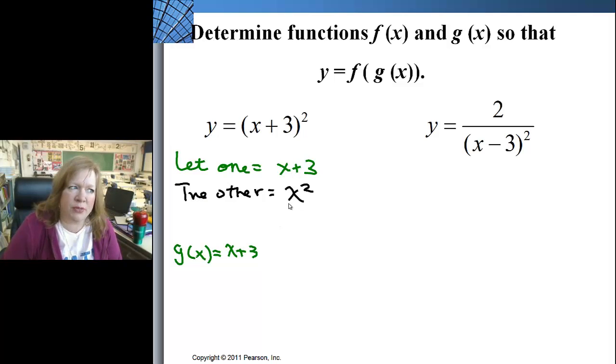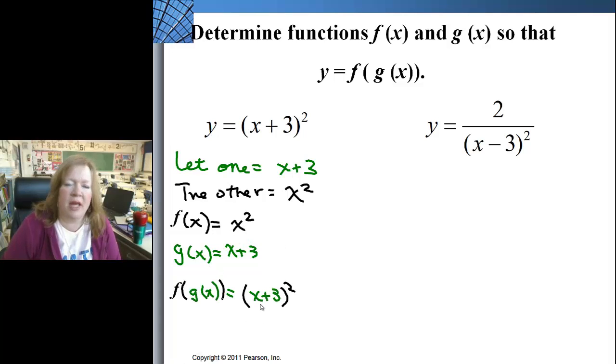I want to take x plus 3 and replace the x in the second function so that it's x plus 3 quantity squared. So since I am putting the x plus 3 into the x squared function, the other function is going to be f of x because the g of x has to go inside the f function. So if I compose f of g, it's going to be x plus 3 quantity squared, so that's what you're trying to do.